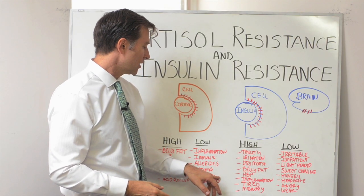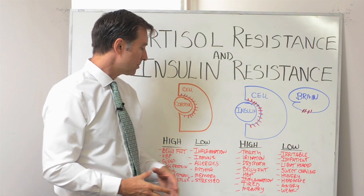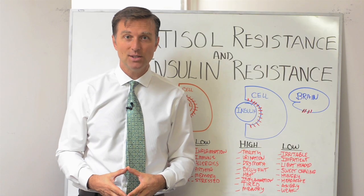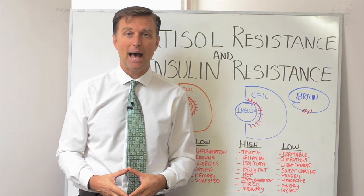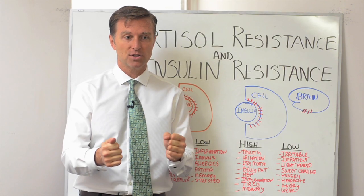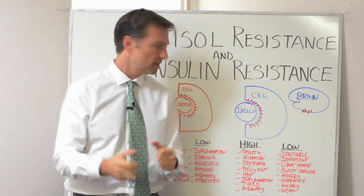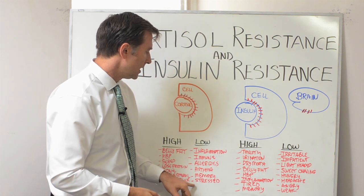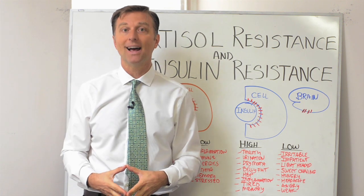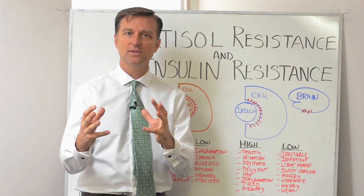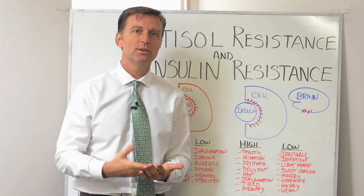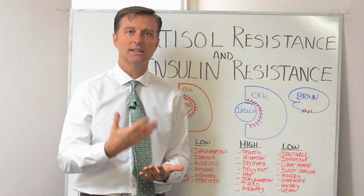Low cortisol can also create problems with memory issues, dementia, and absent-mindedness — like driving down the street and forgetting where you're going. You're constantly in a state of stress because you don't have the hormones to counter it, so you have a low tolerance and you're impatient.